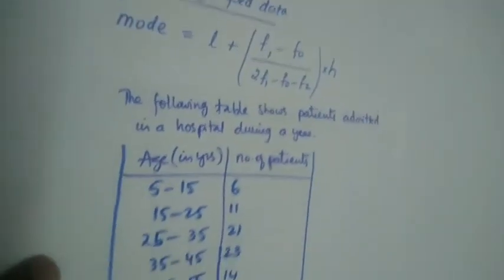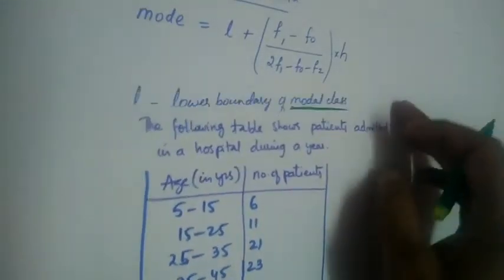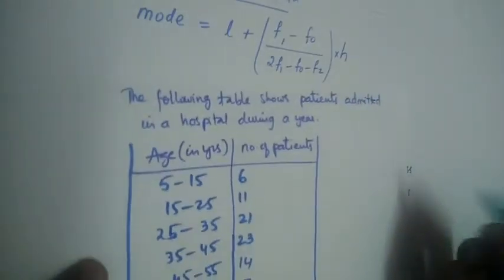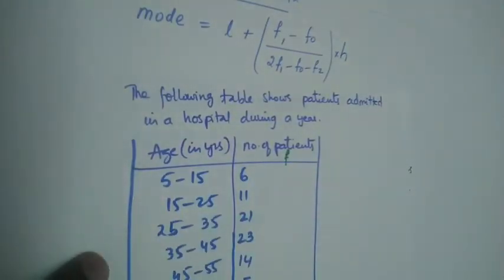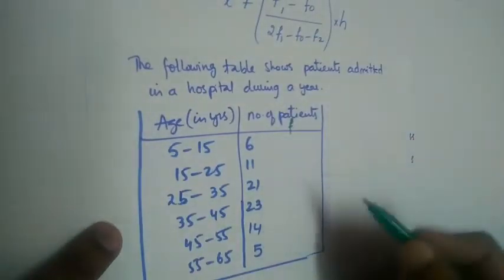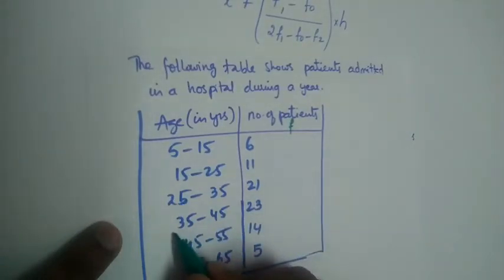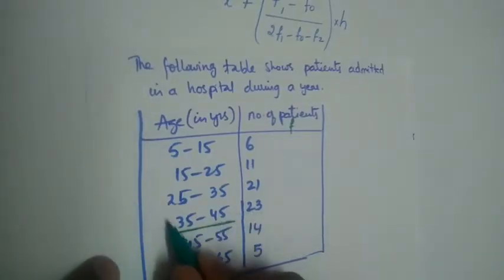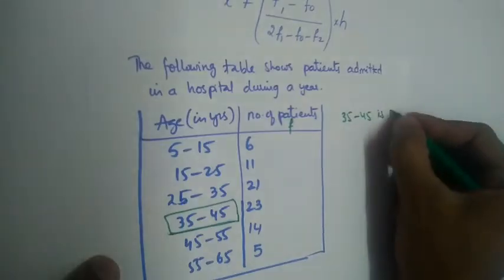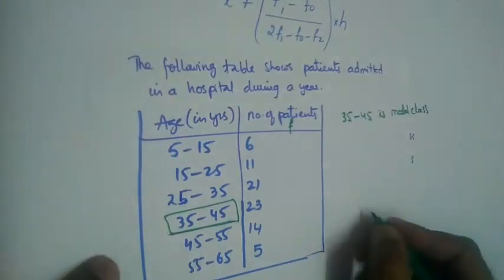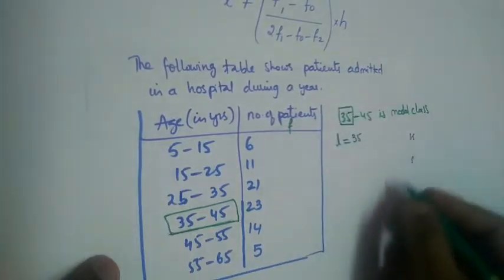First, let us find L. L is the lower boundary of the modal class. To find the modal class, check for the highest frequency. The number of patients is the frequency. The values are 6, 11, 21, 23, 14, and 5. The highest frequency is 23, and its class is 35 to 45. So 35 to 45 is the modal class, and L, the lower boundary, is 35.